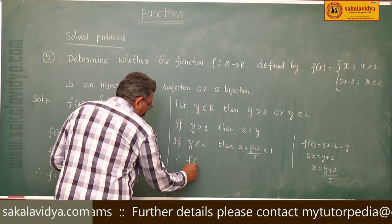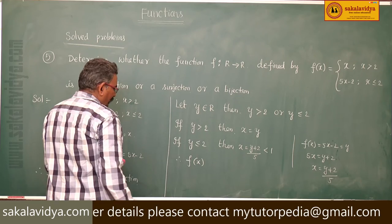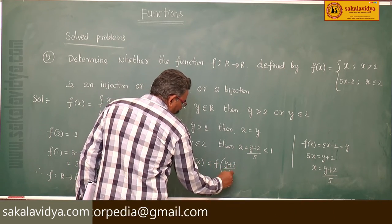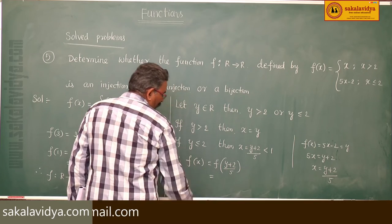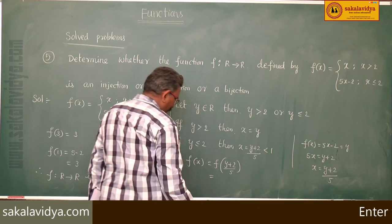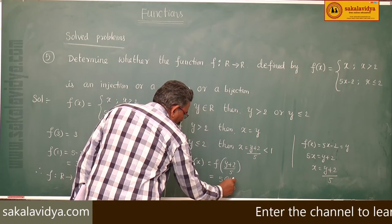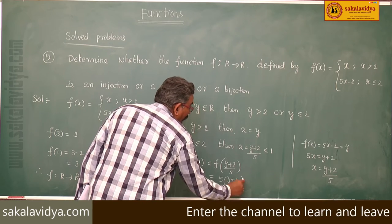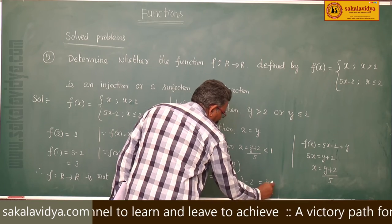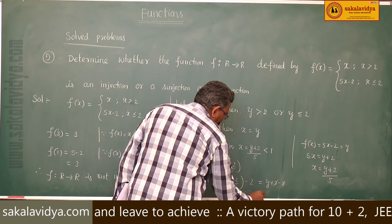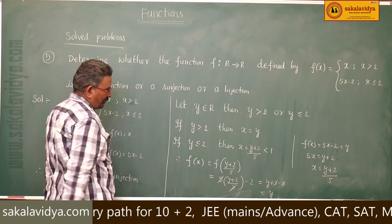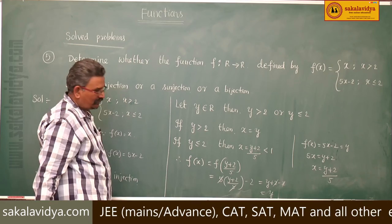Now substituting x = (y + 2) / 5 into f(x) = 5x - 2: we get 5 × (y + 2)/5 - 2 = y + 2 - 2 = y. So f(x) = y in this case as well. Therefore f(x) = y for both cases.